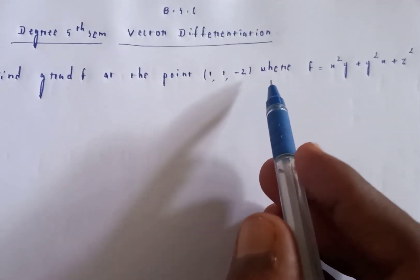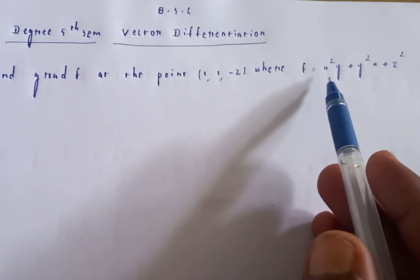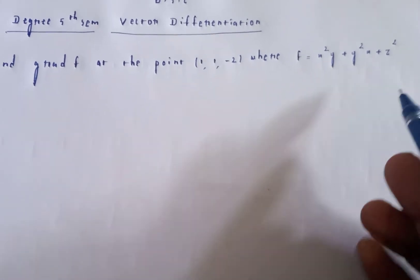Find gradient F at the point (1, 1, -2) where F equals x²y + y²x + z².